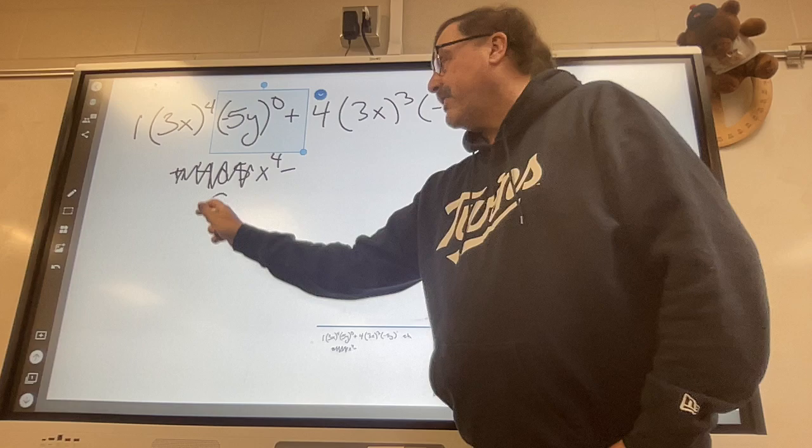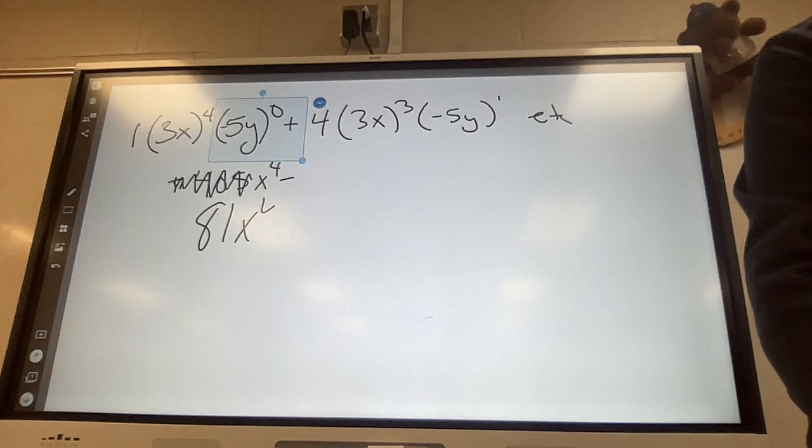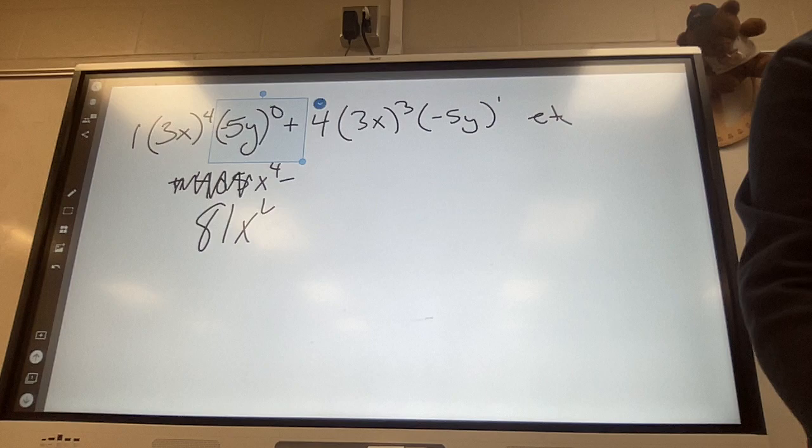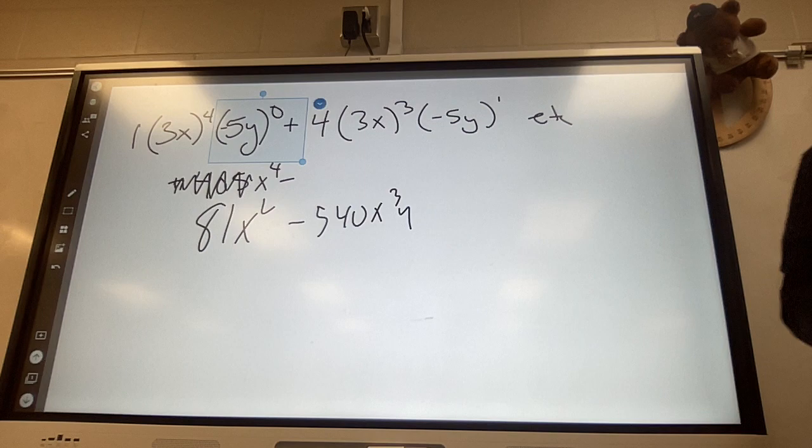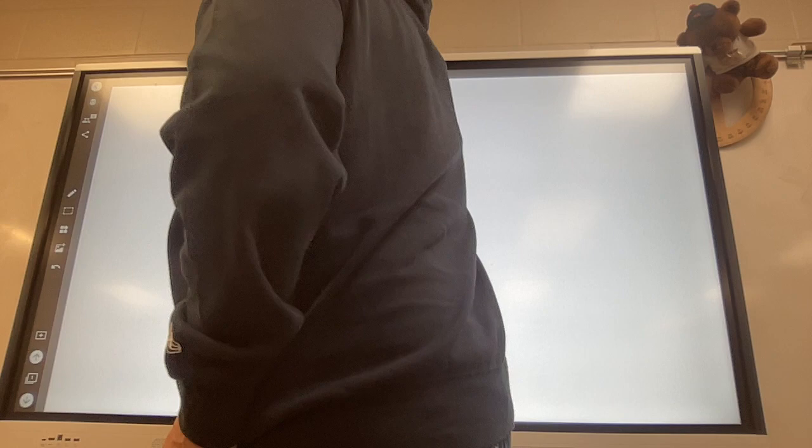Start again. Negative five to the zero is regular one. So it's just three, three, three, three. It's just 81. Let's do it on there. Now, four times three to the third times negative five to the first. Four times three to the third times parentheses negative five. Negative 540.